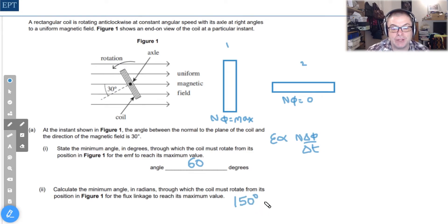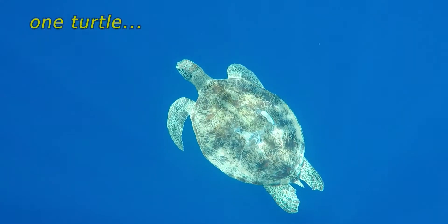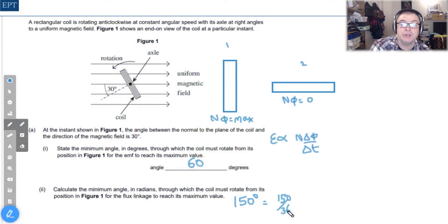To convert that to radians we work out the fraction that 150 degrees is of one total rotation and times it by 2π.